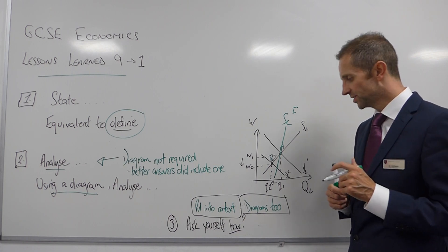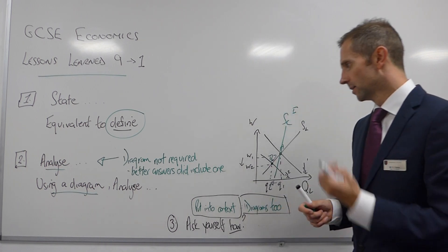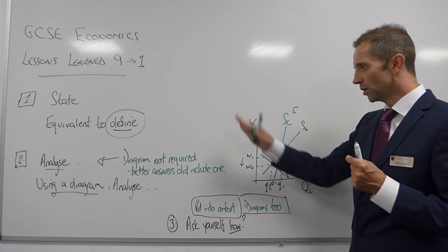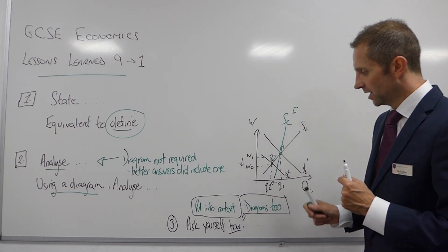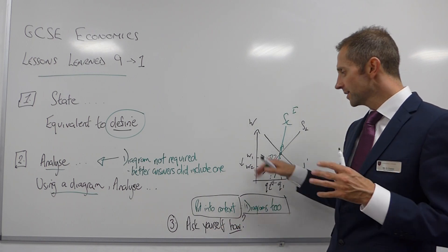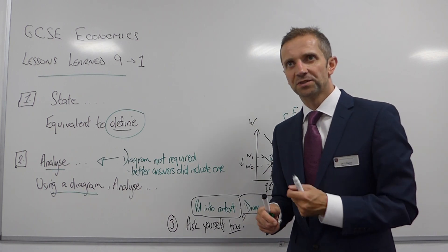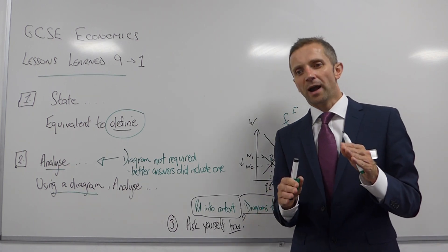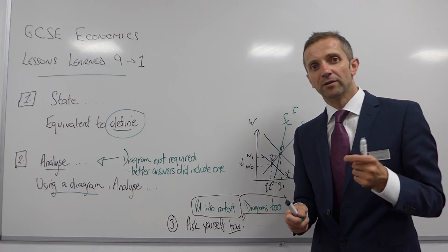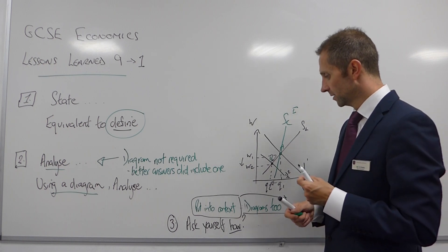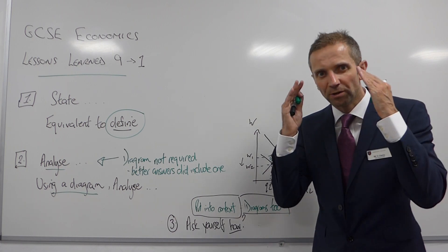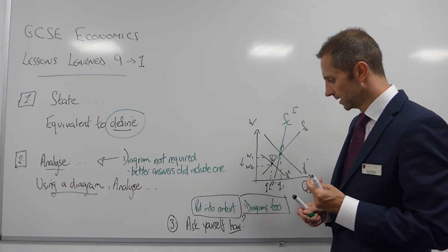A final point, and this is a kind of extension: in order to get six marks out of six, when you've done all of your analysis, ask yourself 'how?' What do I mean by that? How might this impact economic agents — or how might it impact some of the stakeholders who are referenced within the case study material? Ask yourself that, and once you've got an answer in your head, put that answer on paper.